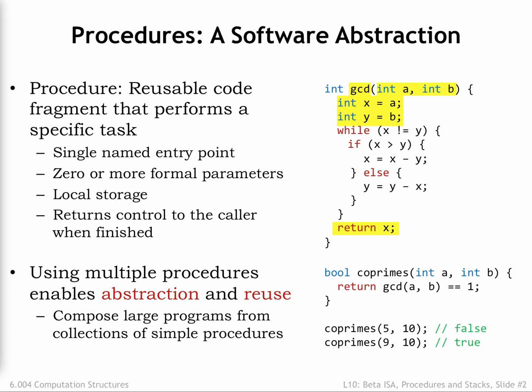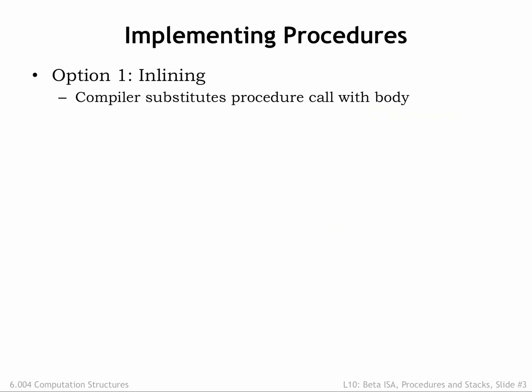Enough about the virtues of the procedural abstraction. Let's turn our attention to how to implement procedures using the beta ISA. A possible implementation is to inline the procedure, where we replace the procedure call with a copy of the statements in the procedure's body, substituting argument values for references to the formal parameters. In this approach, we're treating procedures very much like UASM macros, in other words a simple notational shorthand for making a copy of the procedure's body.